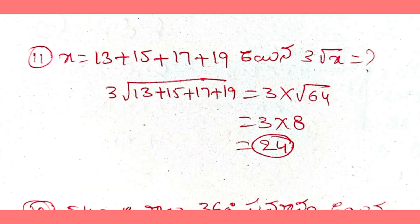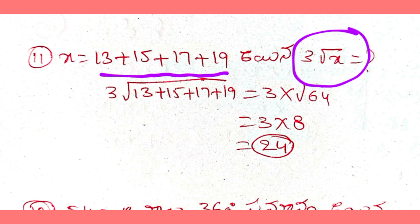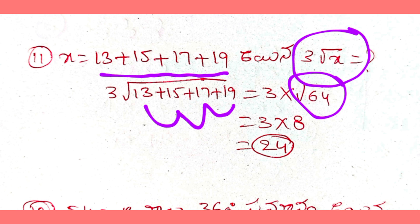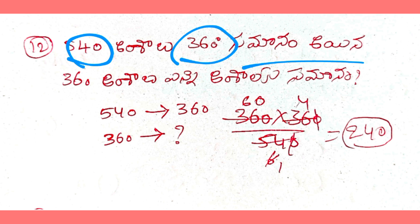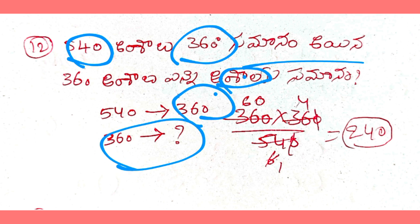Next, x is equal to 13 plus 15 plus 17 plus 19. So 3 into root x is equal to root x. 13 plus 15 plus 17 plus 19 equals 64. So root 64 equals 8, which gives us the result equal to 24.